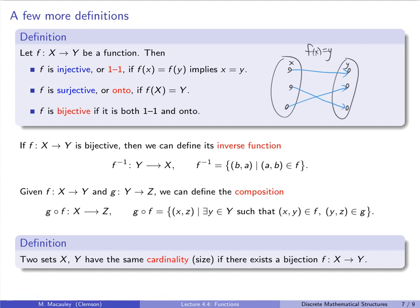This is clear for finite sets but non-trivial for infinite sets. For example, the natural numbers are a proper subset of the integers — both are infinite. Do they have the same size? The real question is: can every natural number reach out and shake hands with a unique integer with no one left out? Formally, two sets X and Y have the same cardinality if there exists a bijection between them.